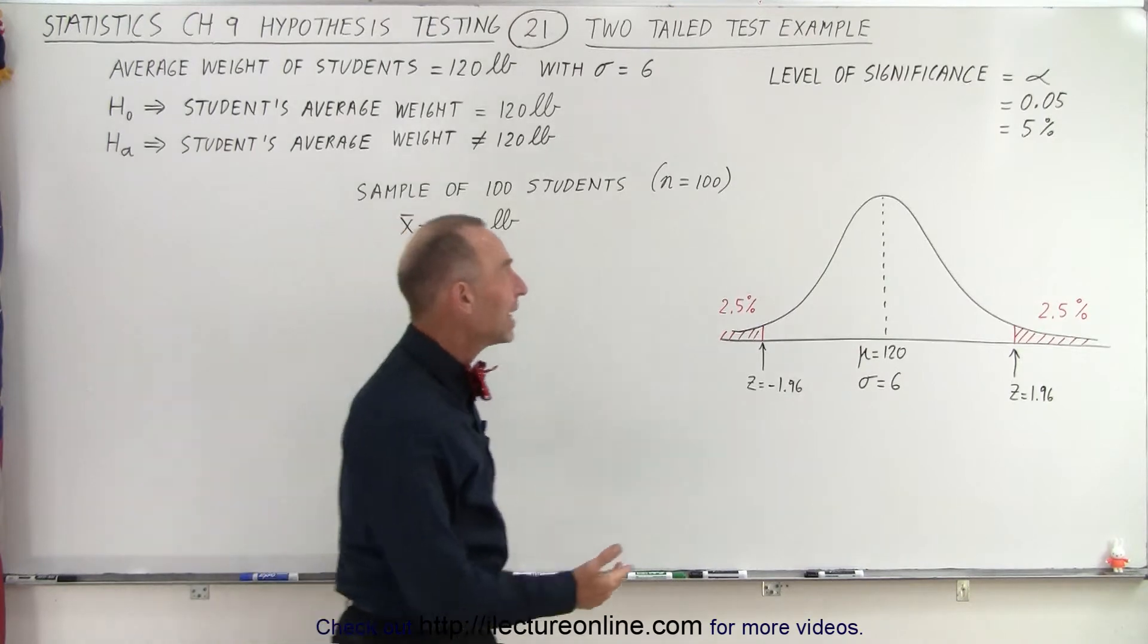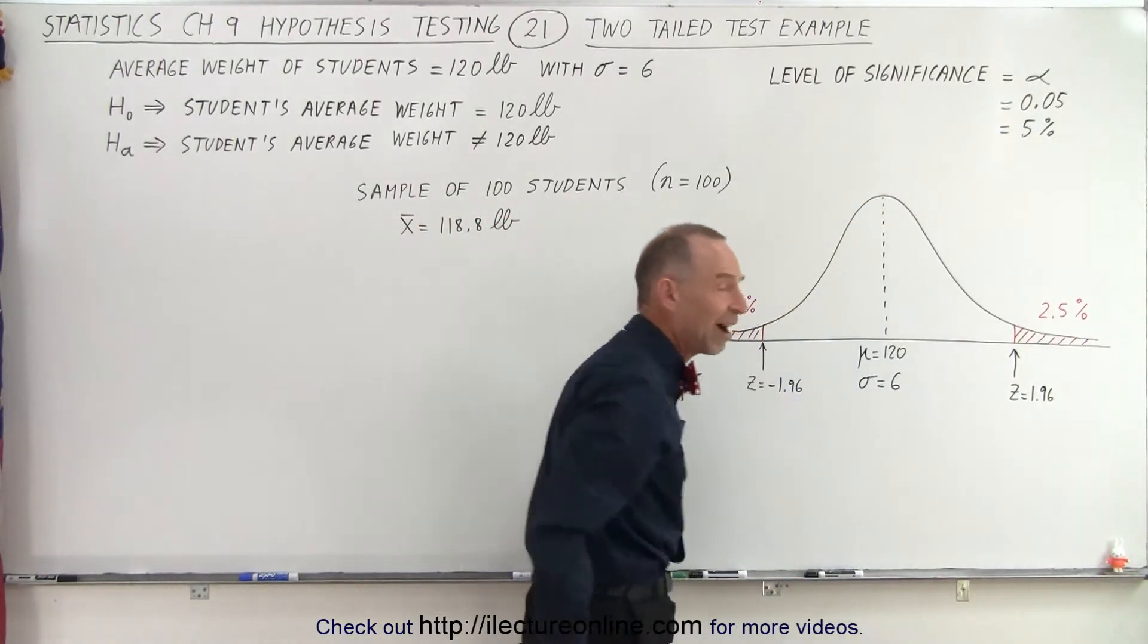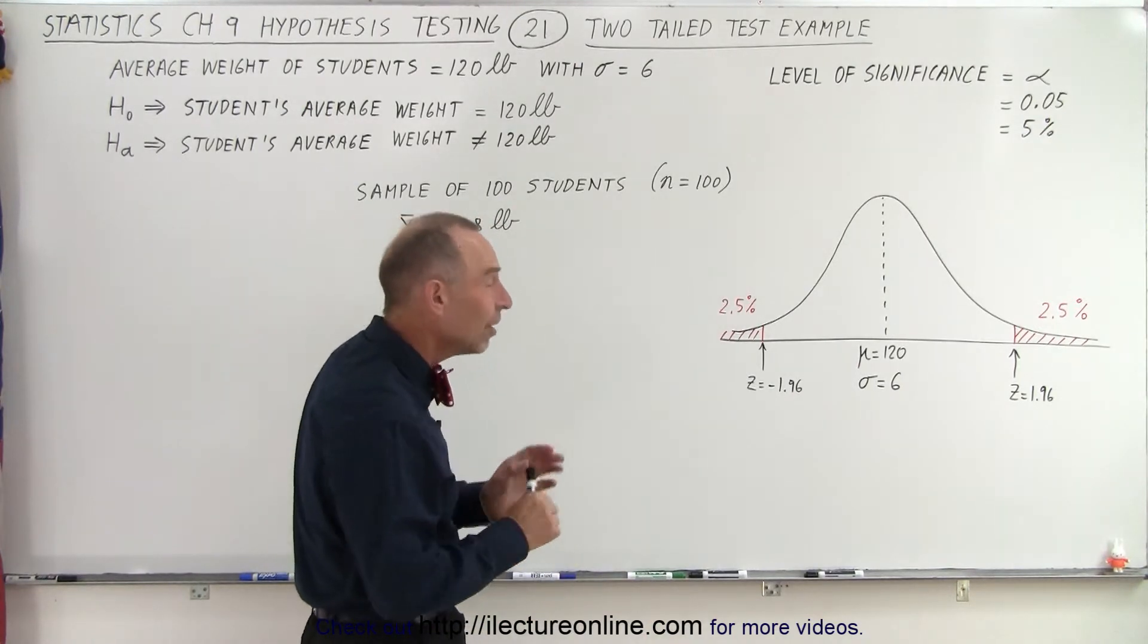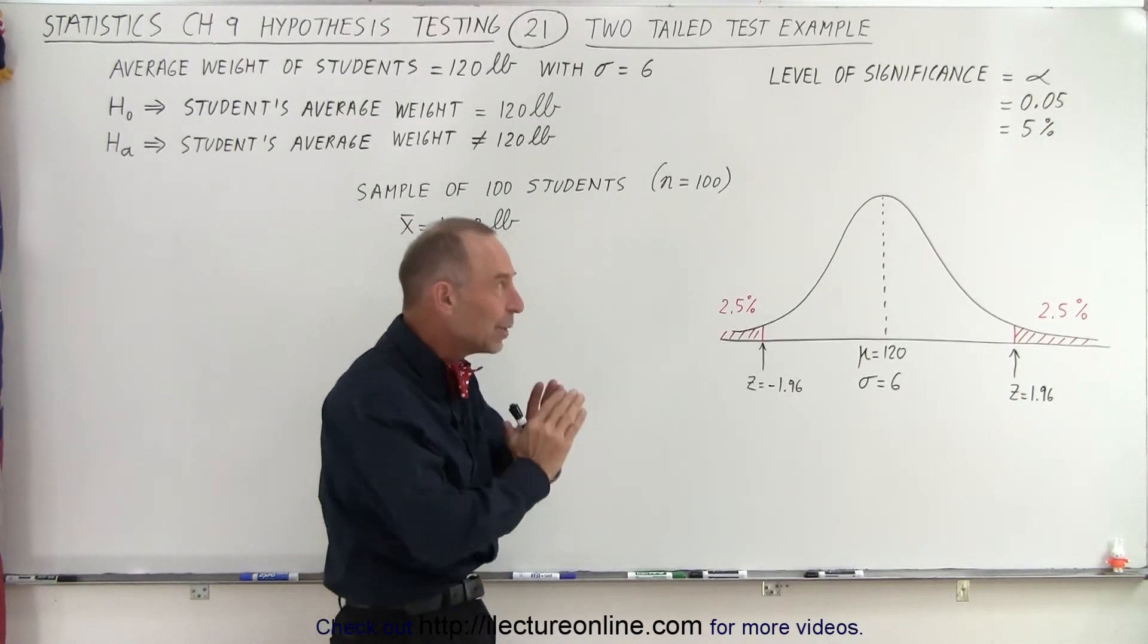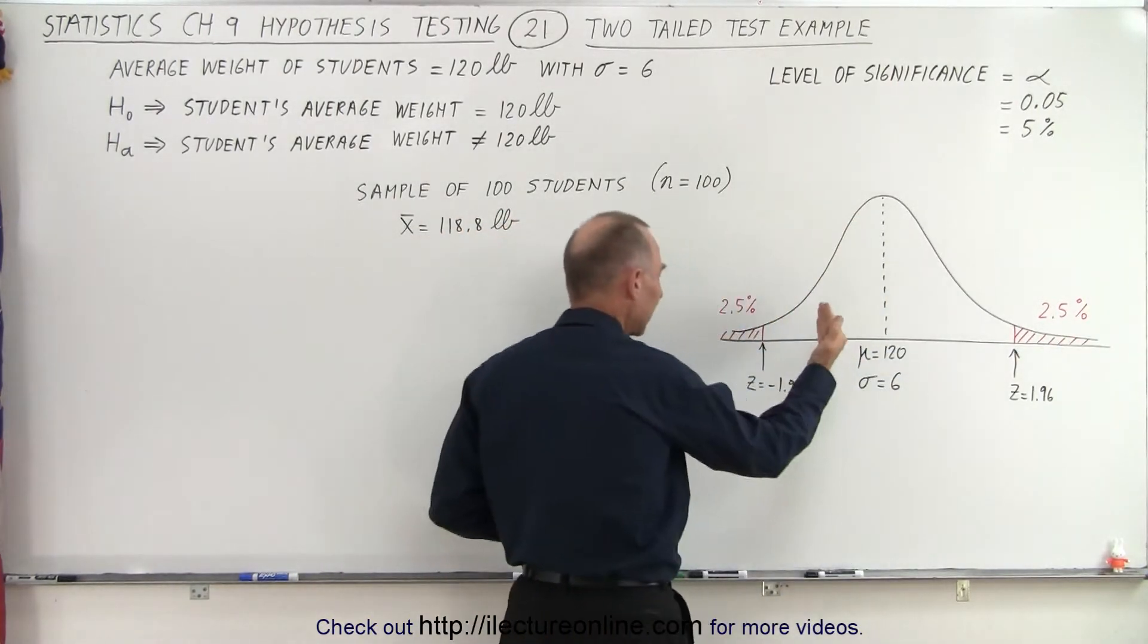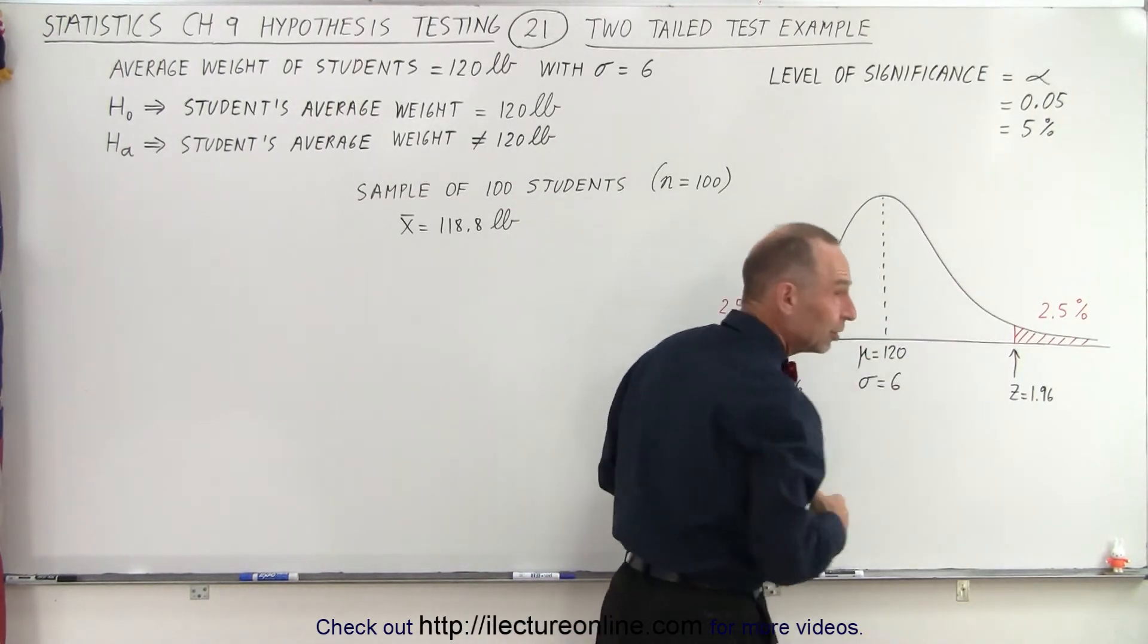And let's say that we take a level of significance equal to 0.05 which is 5%, and of course we use the symbol alpha to indicate 5%. We take that 5% and equally distribute it on both sides. So we put 2.5% on the right side and 2.5% on the left side, and of course we need to know the z value,